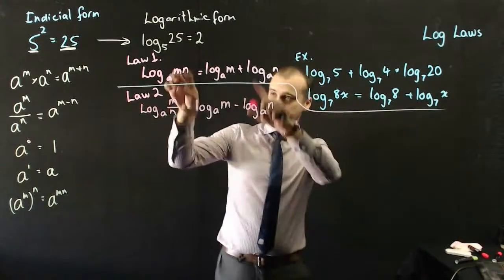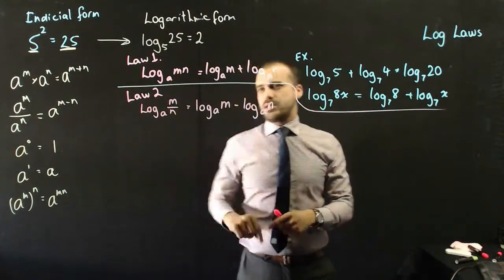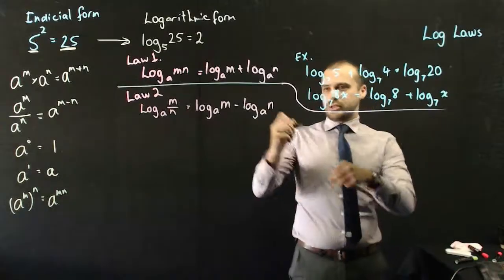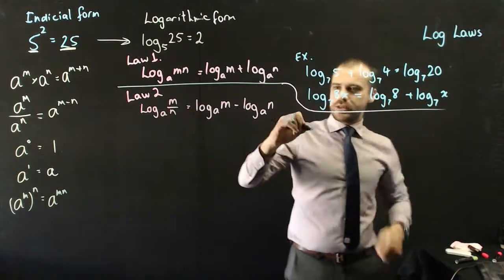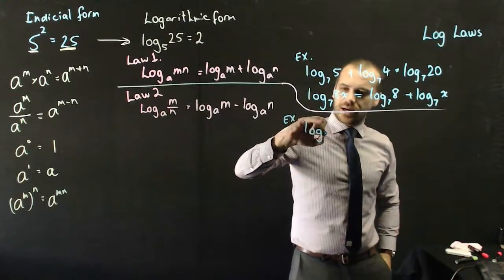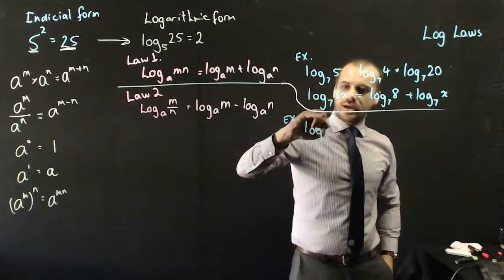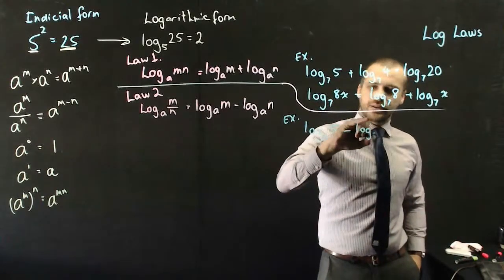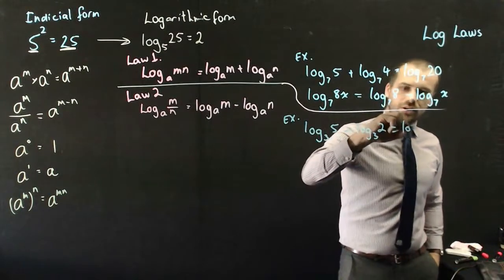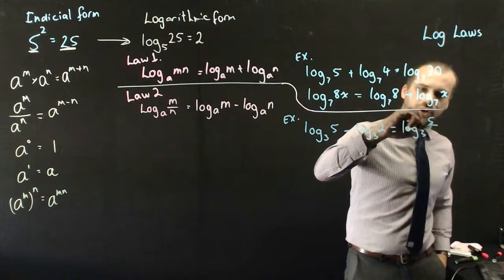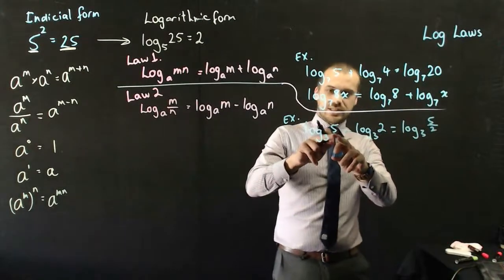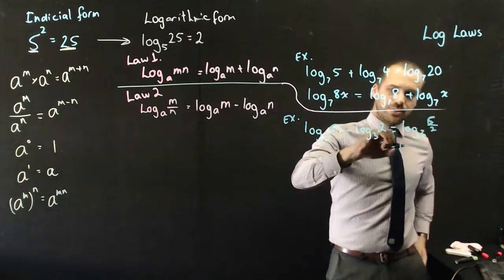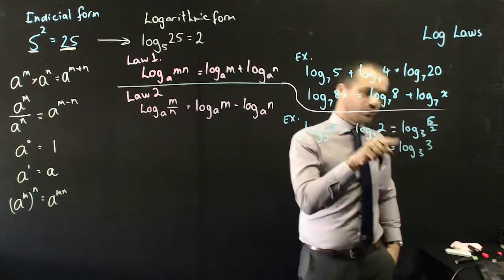Another law — the matching law: log base a of (m divided by n) is log base a of m minus log base a of n. For example, log base 3 of 5 minus log base 3 of 2 equals log base 3 of (5 over 2). If that were a 6 instead of a 5, it would be log base 3 of (6 over 2), which becomes log base 3 of 3 — and we'll use that in a minute.